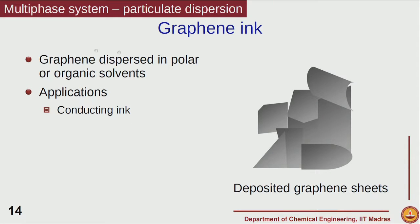Generally, the viscosity of these kinds of materials will of course be more than the solvent itself which is used, however it will not be very high. So unlike a polymer melt or unlike some particulate dispersions at very high concentration, these are likely to be very well-flowing materials which flow easily.